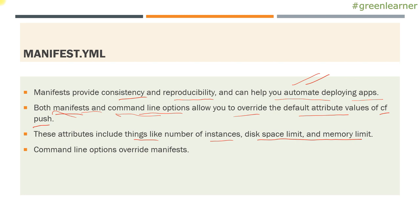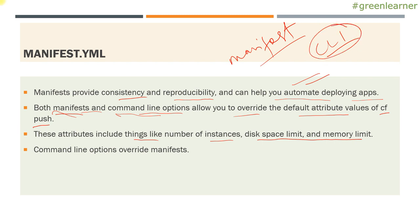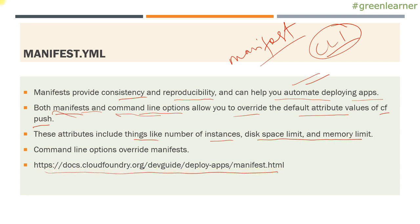When you have both a manifest YAML file and a command line attribute for the same thing, whatever you mention in the command line will be the highest priority — that will be honored. So when you have the same thing defined in manifest YAML inside the file and in the CLI also, the command line takes precedence. This is the reference doc that you can go through; there are many more attributes for the manifest YAML.